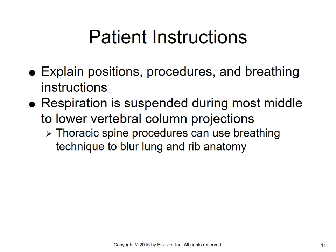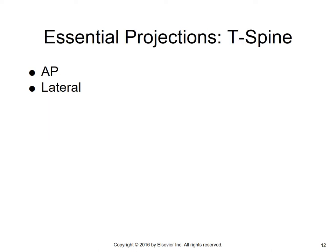For patient instructions, explain procedures, positions, and breathing instructions. Respiration is suspended during most middle to lower vertebral column projections. Thoracic spine procedures can use a breathing technique to blur lung and rib anatomy. There are basically two essential projections for the T-spine: an AP and a lateral. Often a third projection is done for the upper cervical-thoracic region, referred to as the swimmer's projection.